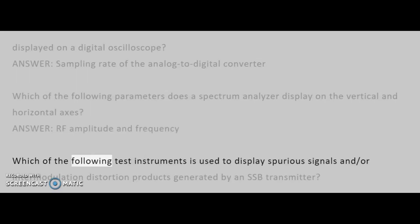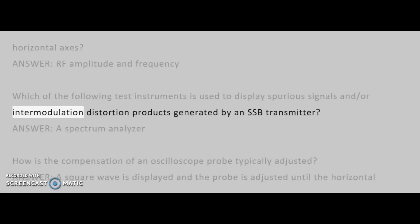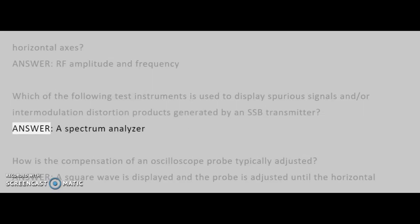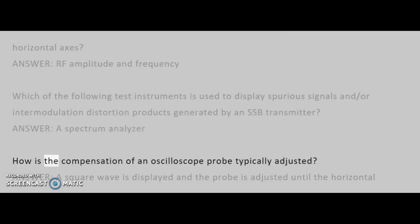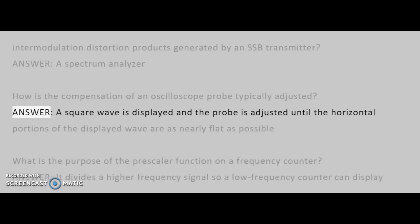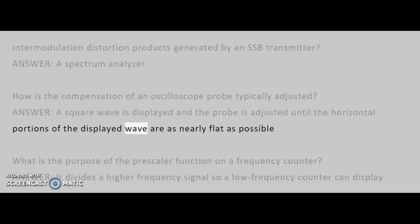Which of the following test instruments is used to display spurious signals and/or intermodulation distortion products generated by an SSB transmitter? Answer: A spectrum analyzer. How is the compensation of an oscilloscope probe typically adjusted? Answer: A square wave is displayed and the probe is adjusted until the horizontal portions of the displayed wave are as nearly flat as possible.